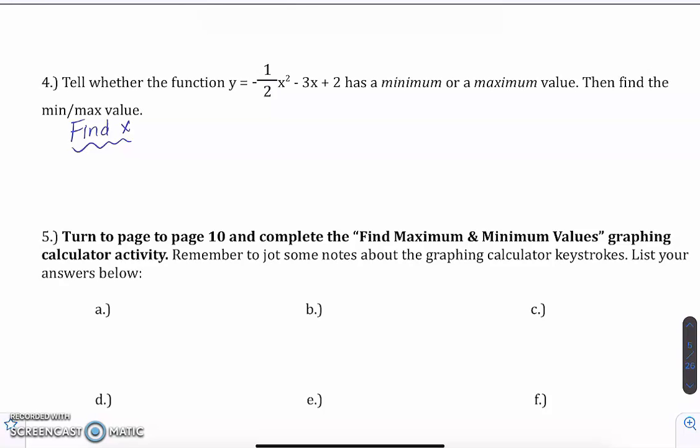So the first thing we have to know to figure out if it's a minimum or maximum is which way it opens. So the negative in the front of your equation tells you that it's going to open down, putting the vertex at the top. So that's going to be a maximum.